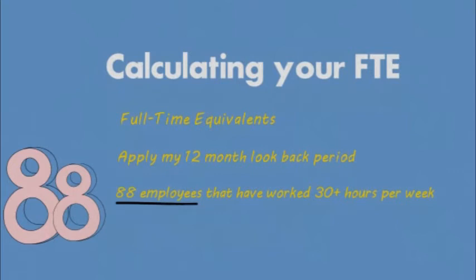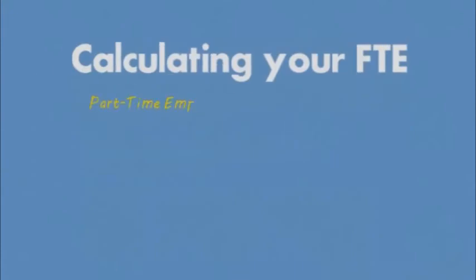Now, at first glance, you may want to assume that I'm safe from having to pay a penalty in 2015 because I have less than 100 employees. However, to calculate FTE, I still need to add in my part-time employees. When I look at my part-time employees over the last 12 months, I see that I have 36 employees who have been working less than 30 hours per week. To add the part-time employees to the FTE, I first have to determine how many hours per month they've been working.